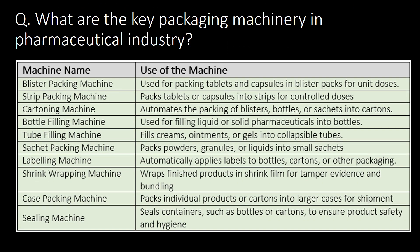What are the key packaging machinery in the pharmaceutical industry? The key packaging machineries or equipments are blister packing machine, strip packing machine, cartoning machine, bottle filling machine, tube filling machine, sachet packing machine, labelling machine, shrink wrapping machine, case packing machine, and sealing machine.